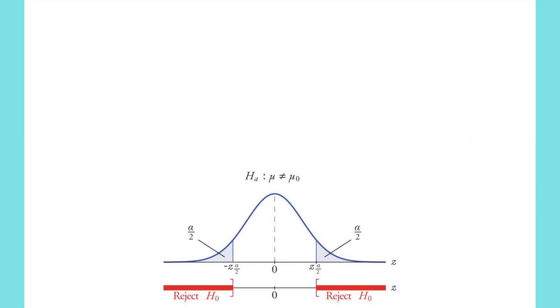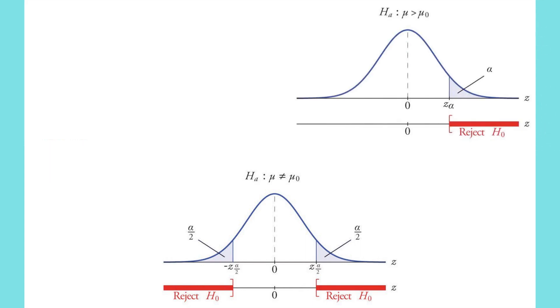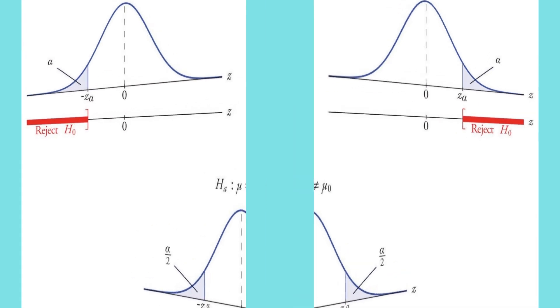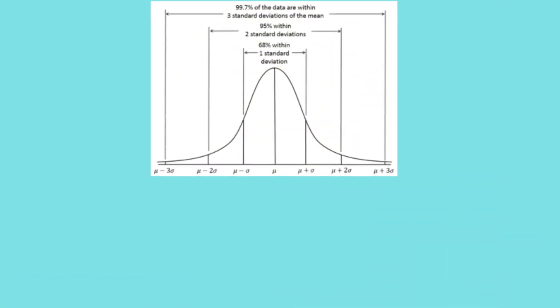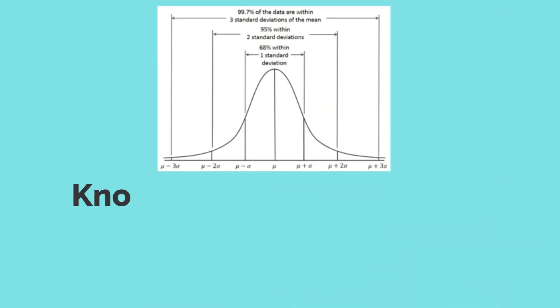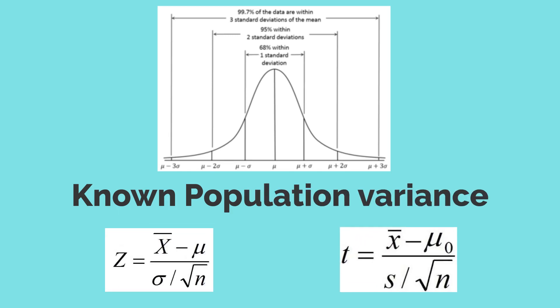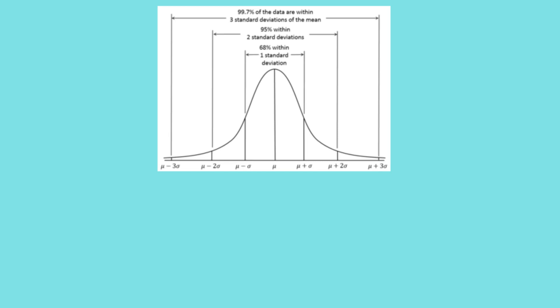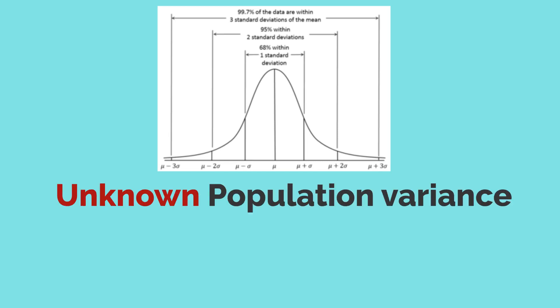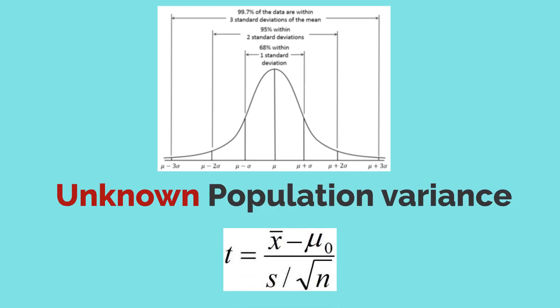In such cases, we test whether the mean of a single population is equal to, greater than, or less than some hypothesized value. For hypothesis tests concerning the population mean of a normally distributed population with known population variance, use of either a z-test or a t-test is acceptable. For unknown population variance, the theoretically correct test statistic is the t-statistic.